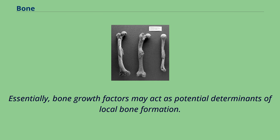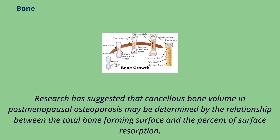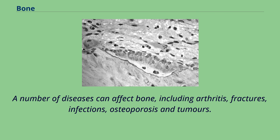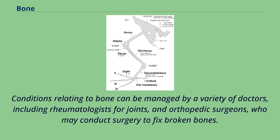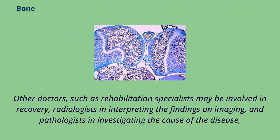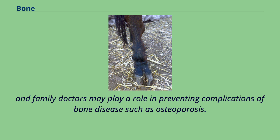Research has suggested that cancellous bone volume and postmenopausal osteoporosis may be determined by the relationship between the total bone-forming surface and the percent of surface resorption. A number of diseases can affect bone, including arthritis, fractures, infections, osteoporosis, and tumors. Conditions relating to bone can be managed by a variety of doctors, including rheumatologists for joints and orthopedic surgeons who may conduct surgery to fix broken bones. Other doctors such as rehabilitation specialists, radiologists, and pathologists may also be involved, and family doctors may play a role in preventing complications of bone disease such as osteoporosis.